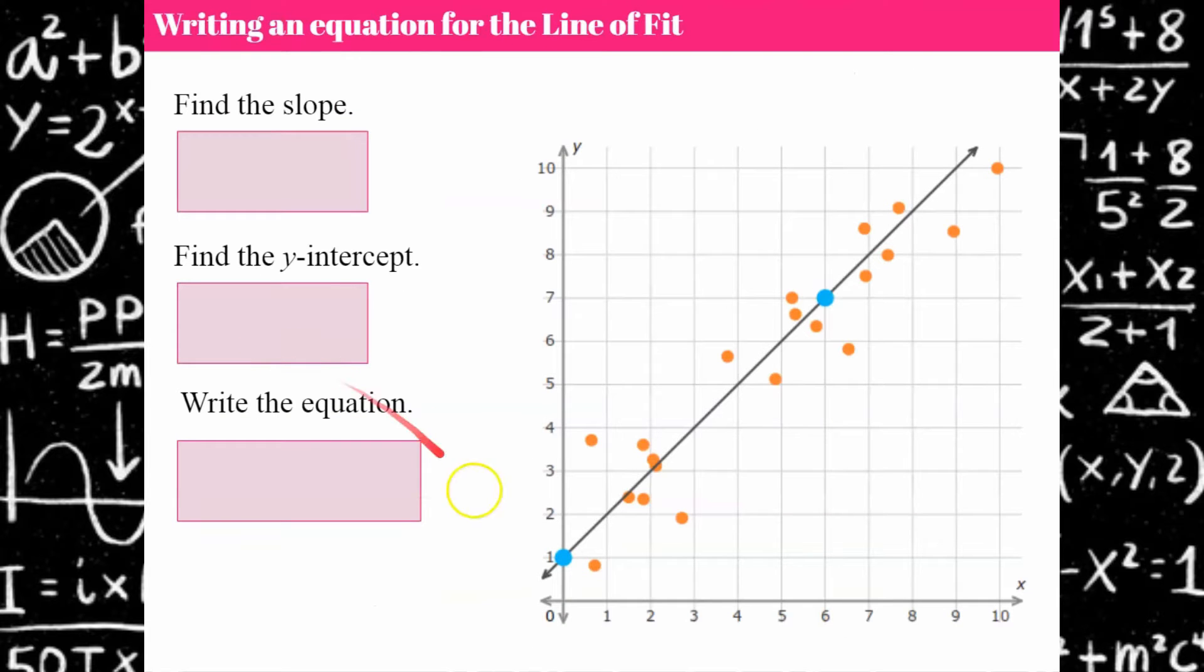All right, so now I would like you to use these blue points and find the slope, identify the y-intercept, and write the equation of this line. You can even pretend that these points from the scatter plot aren't even there. Go ahead and pause, come back and hit play when you're ready to check your work.